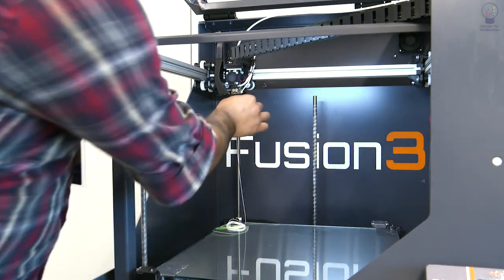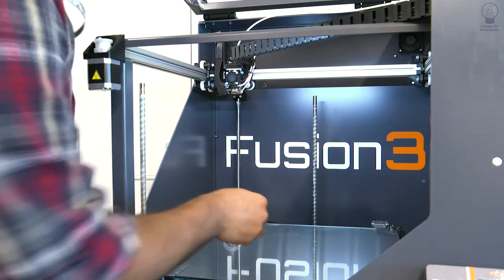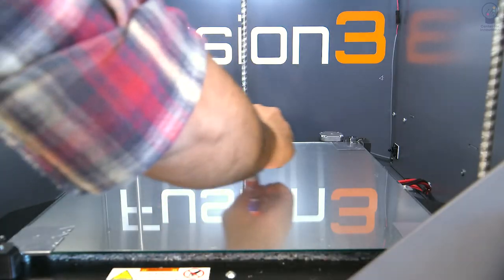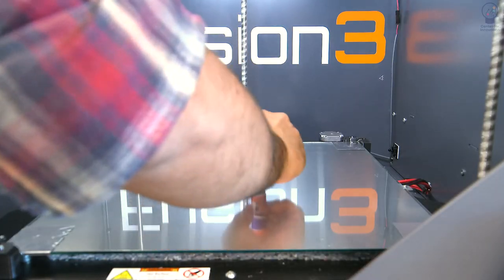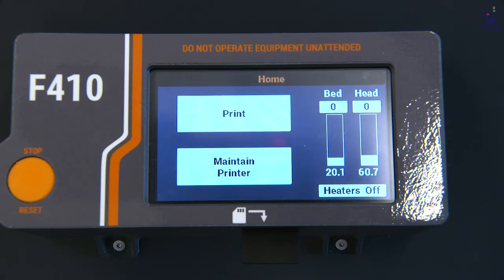Remove the extruded filament from the bed. Smear a regular glue stick over the area of the bed where the print will go.